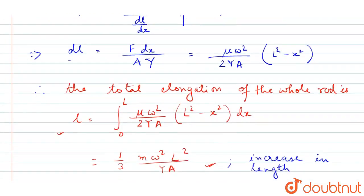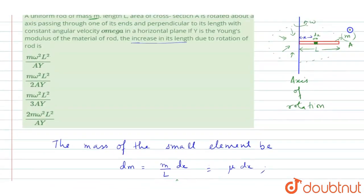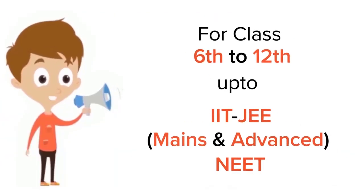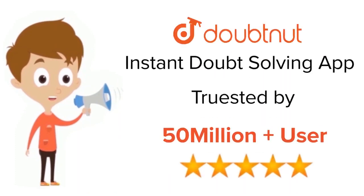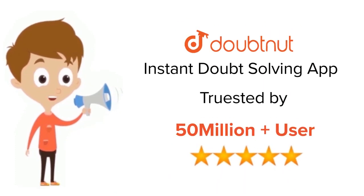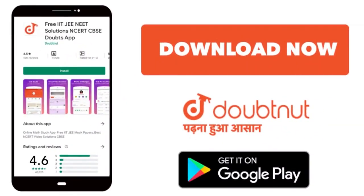Checking the options, the third option matches our answer. I hope you liked the video. Thank you. For class 6 to 12, IIT-JEE and NEET level, trusted by more than 5 crore students — download DoubtNet today.